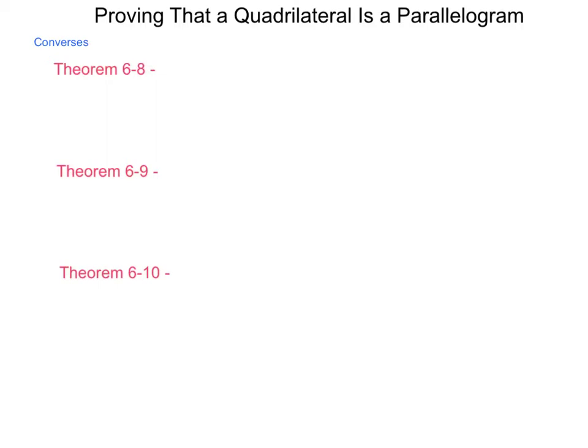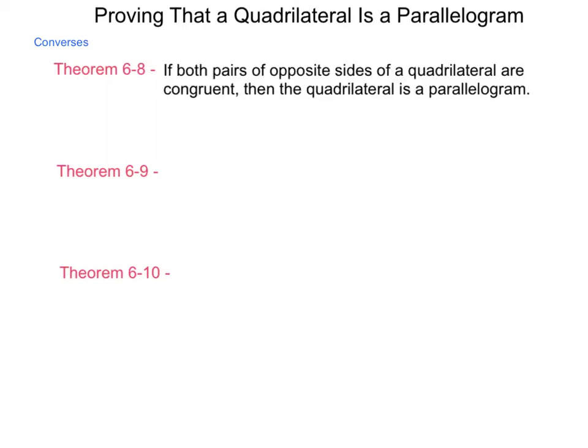So each of the theorems we're going to be looking at in this lesson will be a converse of some sort to a lesson from the previous lesson. So let's begin with theorem 6-8. This is the converse of theorem 6-2, and it states if both pairs of opposite sides of a quadrilateral are congruent, then the quadrilateral is a parallelogram.